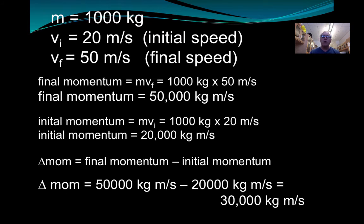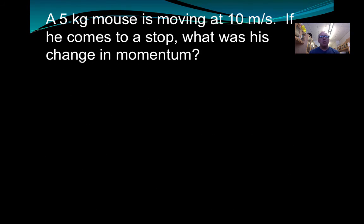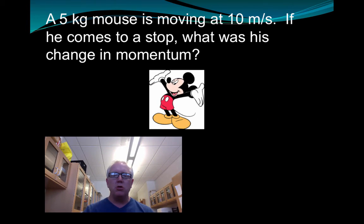All right. So hopefully that worked out. And if it was a little bit confusing, which physics can be, please bring your questions back to class with you. So here's a problem. A 5-kilogram mouse is moving at 10 meters per second, comes to a stop. What was the change in momentum? Well, that seems like an odd question, a 5-kilogram mouse. That would be roughly 10 pounds of mouse. That sounds a little bit concerning and frightening, unless you know that this is the mouse that I had in mind. There he is, Mickey the Mouse.